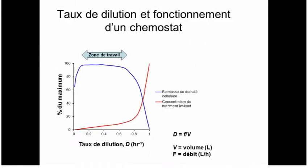The trick is to regulate flow so you maximize bacterial growth rate and the amount of bacteria recovered per unit time, without having the flow rate so high that everything gets washed out. The key parameter is the dilution rate — the flow rate divided by the volume of the culture flask. For example, a flow rate of 200 ml/hour with a 1-litre flask gives a dilution rate of 0.2.